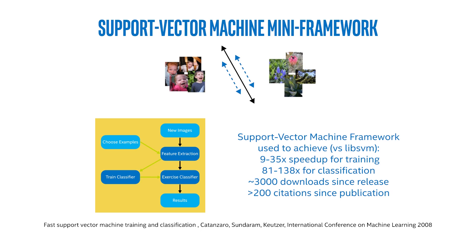So altogether, this puts together a real support vector machine mini-framework. This is not a toy example, as simple as it may seem. The support vector machine framework, when results were compared to the LibSVM, the standard support vector machine tool, was able to achieve a 9 to 35x speedup for training, 81 to 138 for classification, and we've had over 3,000 downloads of the software since its release a few years ago, and over 200 citations since its publication.